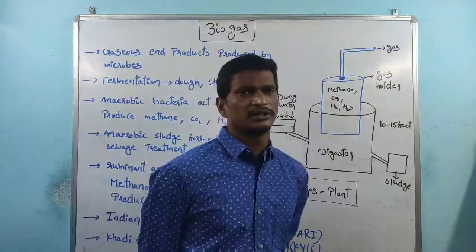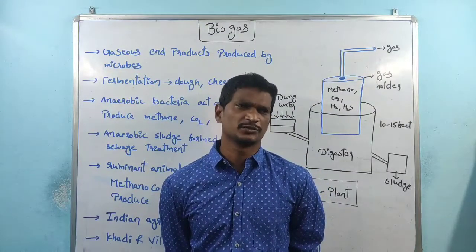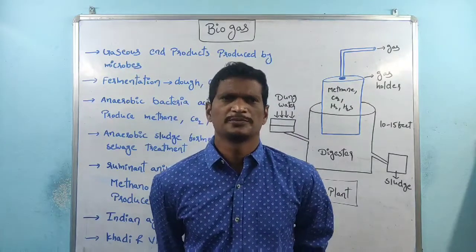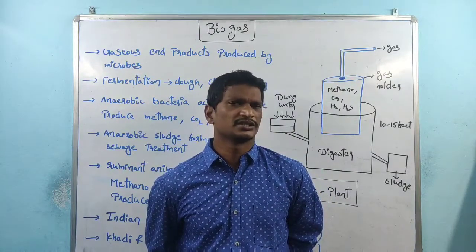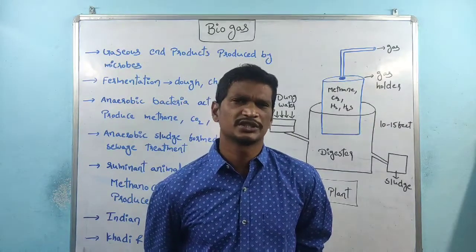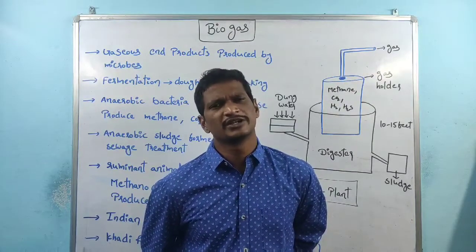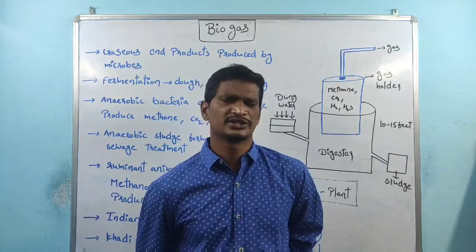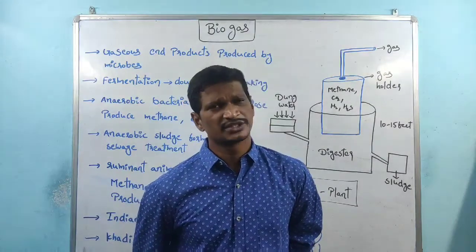Hi students, coming to the next topic is biogas production. In the last class we discussed about sewage waste treatment. Before that, we discussed about different types of products produced by microbes. The chapter is microbes and human welfare. We discussed about alcohol production, cord formation, antibiotics production, and chemicals and enzymes production. After that we discussed about sewage waste treatment.